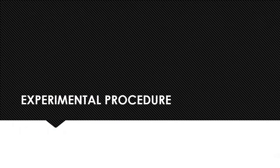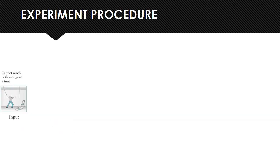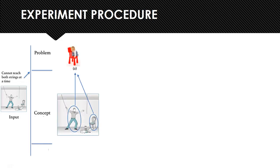Now onto the experimental procedure. Maier's experiment started with the problem that the participant could not reach both strings at the same time, which is our problem statement. One attempted solution was using the chair to stand on while holding one string and trying to reach for the other — which incidentally was not enough.